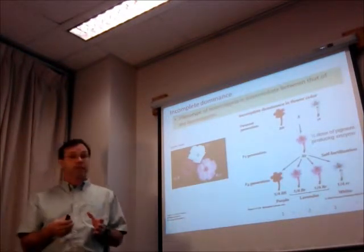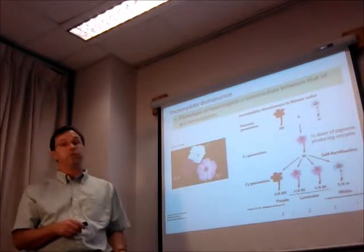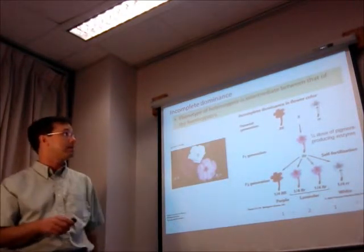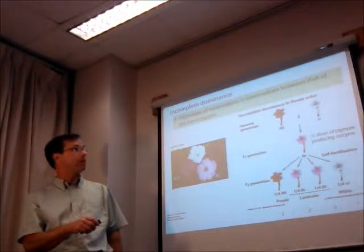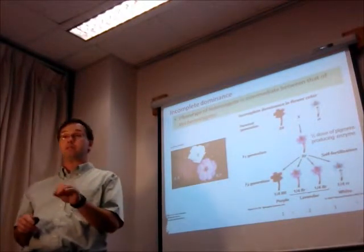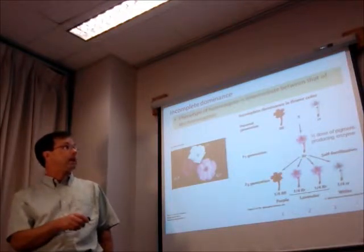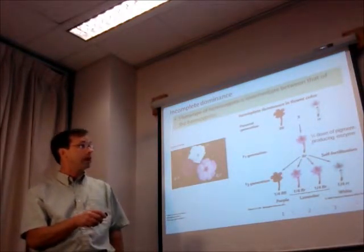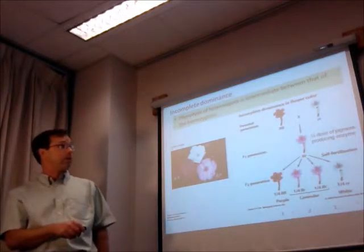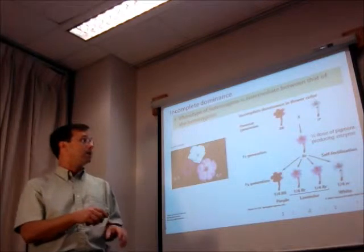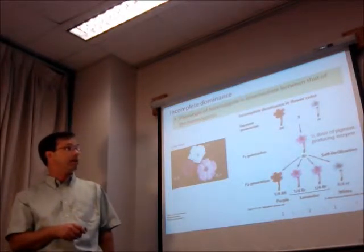So another great example of this kind of thing is the determination of flower color in four o'clocks. In these plants, an enzyme that is involved in making red pigment in the plants is encoded by a different R gene in this case. And if you're homozygous for big R big R, you make two doses of the pigment-producing enzyme, and so you end up with red flowers. If, on the other hand, you're homozygous for little r little r, you don't make any of the pigment-producing enzyme, and you don't make any pigment, you end up with white flowers. On the other hand, if you're a heterozygote, you actually make only a single dose of the pigment-producing enzyme, and you make half as much of the enzyme itself and half as much of the red pigment, and therefore you end up with pink flowers.